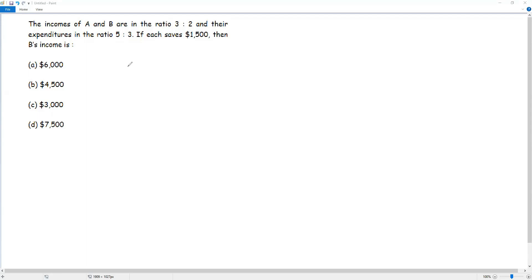Here the incomes of A and B are in the ratio 3 to 2. From the terms of the ratio 3 and 2, if I want to get the income of A and income of B, I have to multiply both terms of the ratio by the same non-zero number, say x.